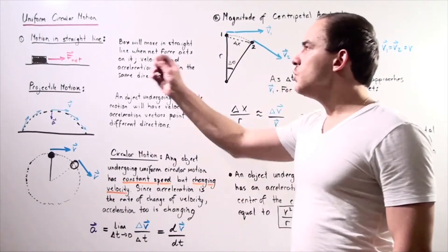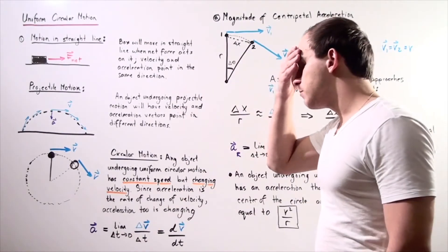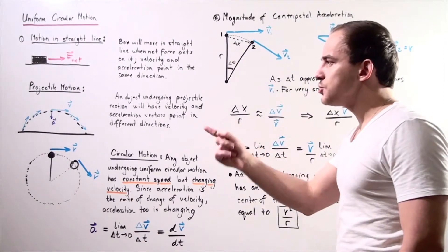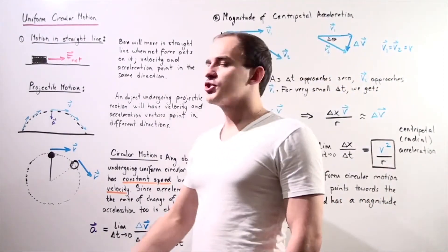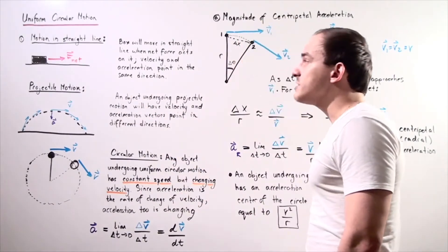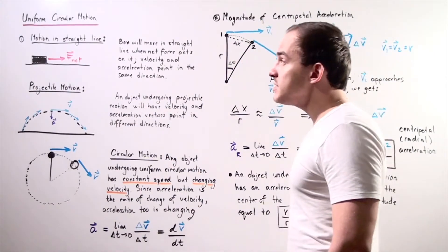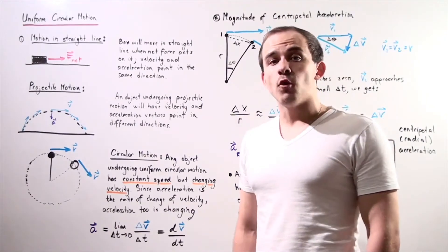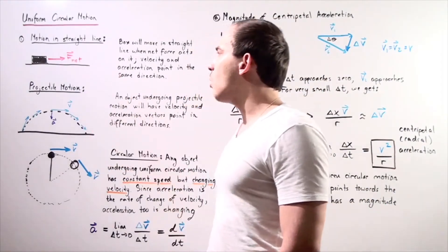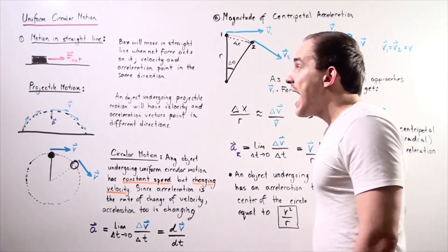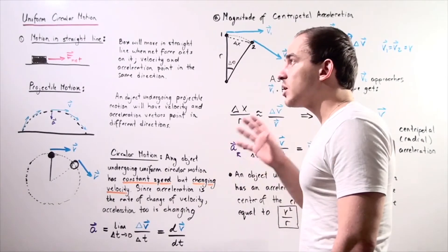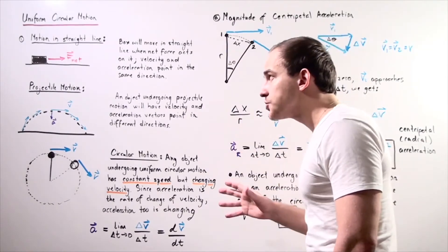Before we talk about uniform circular motion, let's recall how objects move along one dimension and along two dimensions. Suppose we have a box resting on a horizontal surface, and we apply a net force on the box pointing in the positive direction along our x-axis. Our object will begin to accelerate in the same direction as the net force.